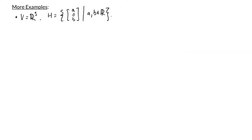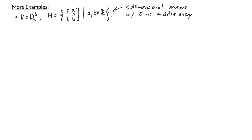In this next example, the vector space V equals R³, and H is the collection of vectors of the form (A, 0, B), where A and B are real numbers. Essentially, H consists of three-dimensional vectors that have zero as the middle entry. Let's check if H is a subspace of V. First condition: is the zero vector in H? Yes, because the zero vector has a zero as the middle entry.